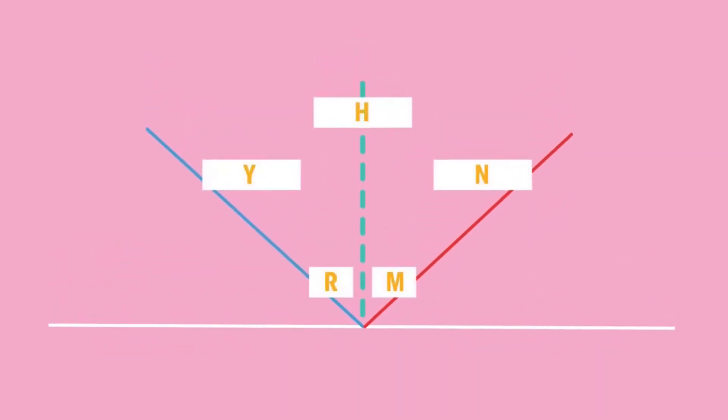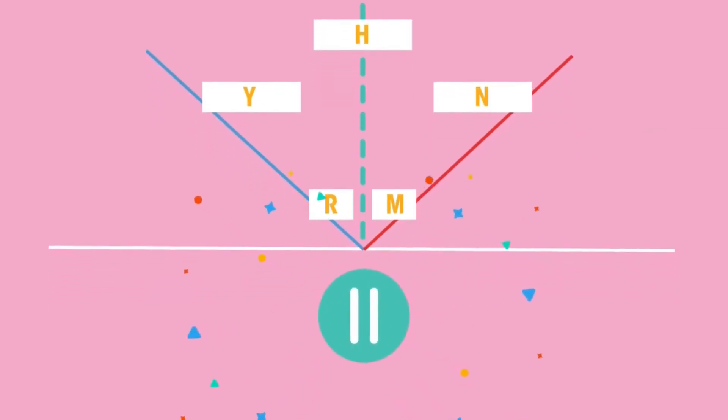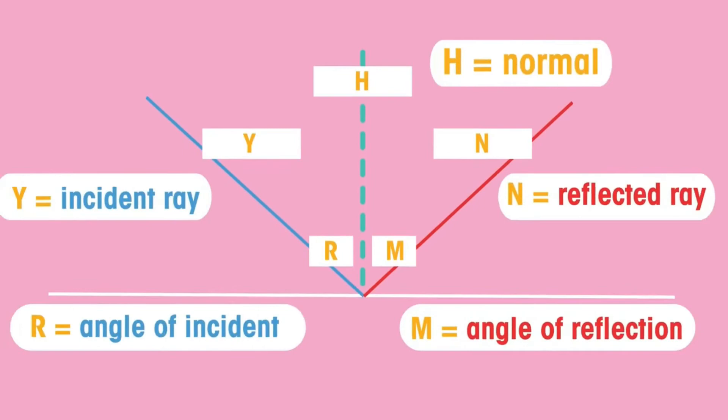Can you label the different parts of this reflection ray diagram? Pause the video and give it a go. Did you get them correct?